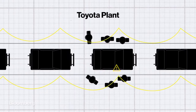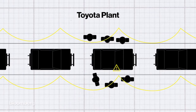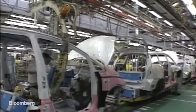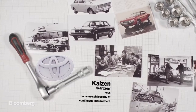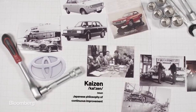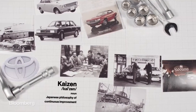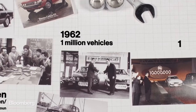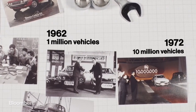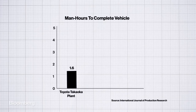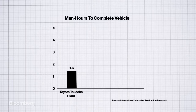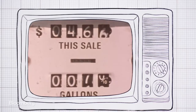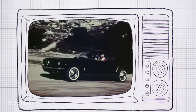Ohno believed this caused more problems and didn't encourage workers or machines to stop making mistakes. So he placed a cord above every station which any worker could pull to stop the entire assembly line if they spotted a problem. The whole team would work on it to prevent recurrence. As teams identified more problems, errors dropped dramatically. Combined with a culture of continuous incremental improvement called kaizen, Toyota built a brand known for reliable and affordable cars. By 1962 they had produced one million vehicles; by 1972, ten million.